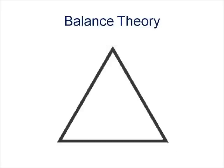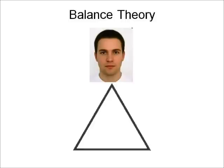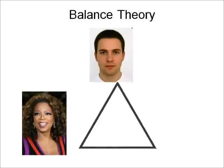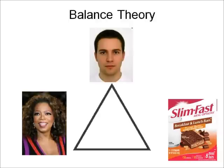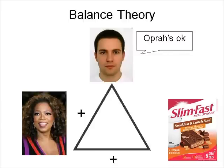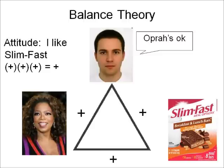Let's take an example. Here's you. Here's another person, Oprah Winfrey. Here's an object, SlimFast. Let's say you like Oprah. Oprah is a spokesperson for SlimFast — well, she really isn't, but let's just say for this example that she is. The Balance Theory would suggest that you will like SlimFast so that your attitude is in balance. To put a bit of algebra into this: a positive times a positive times a positive is a positive. All is well, all is in balance. You like Oprah, Oprah likes SlimFast, you like SlimFast. In this example, everyone likes everyone and everything.